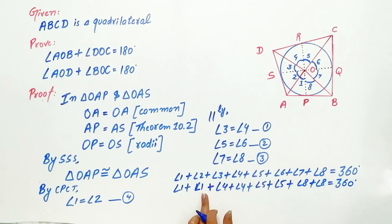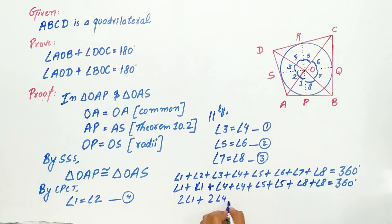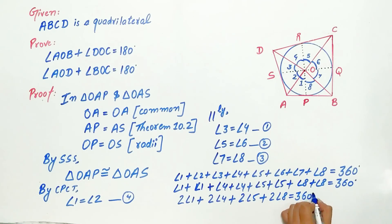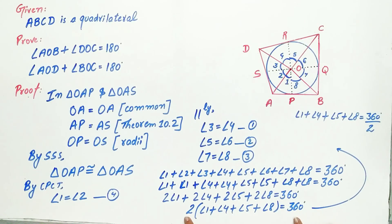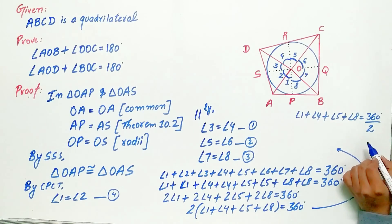Now add them. Angle 1 plus angle 1 is twice angle 1. Angle 4 plus angle 4 is twice angle 4. Angle 5 plus angle 5 is twice angle 5. Angle 8 plus angle 8 is twice angle 8, which equals 360 degrees. Now 2 is common, take it out. Angle 1 plus angle 4 plus angle 5 plus angle 8 equals 360 degrees divided by 2, which is 180 degrees.